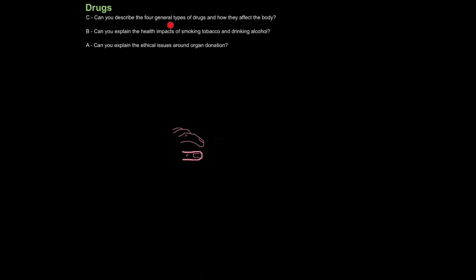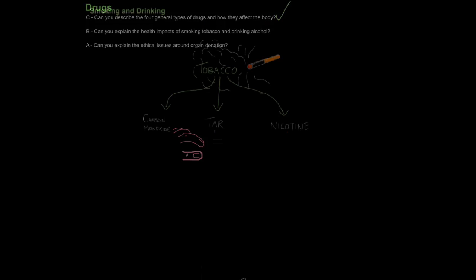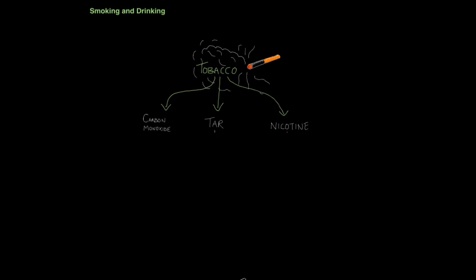And that is how you can describe the four general types of drugs and how they affect the body. So next up, let's look at the effects of smoking and drinking. Now I'm sure you've heard that smoking is bad for you, and these days in schools it's pretty hard not to know why. But as scientists, let's analyse this a little bit more closely.